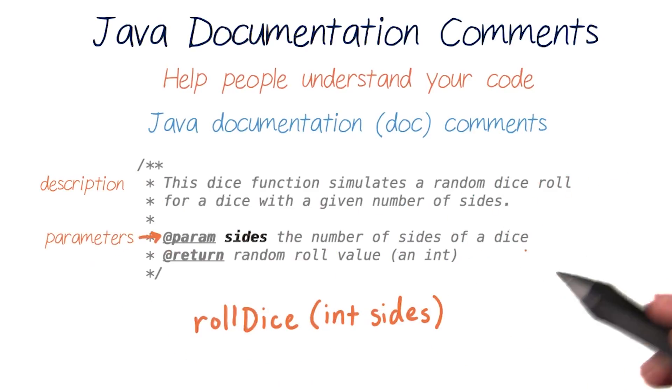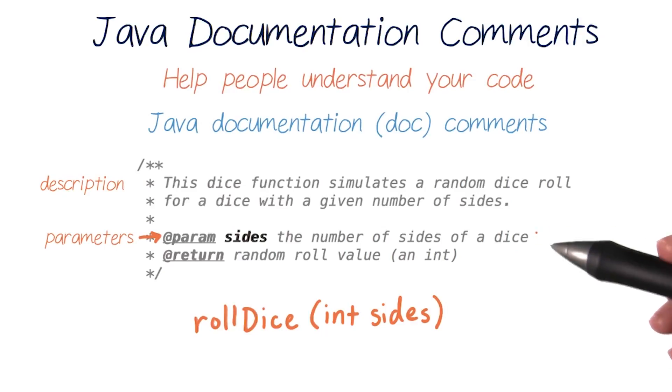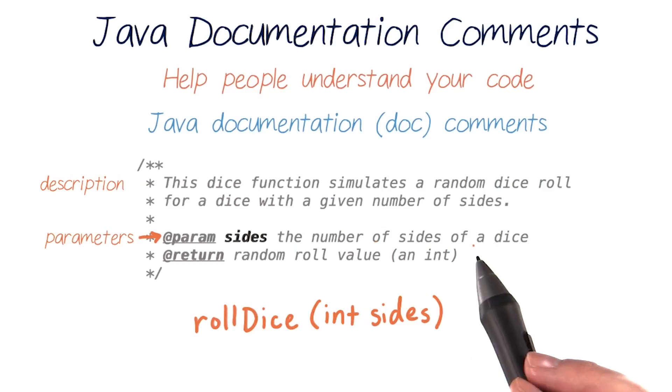Next, a description of the parameter it requires. There's only one parameter named sides, which is the number of sides the dice has.